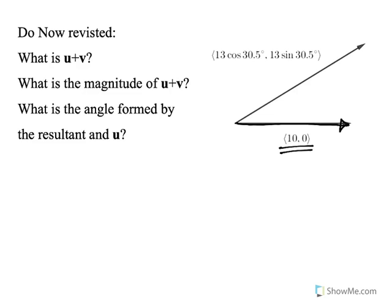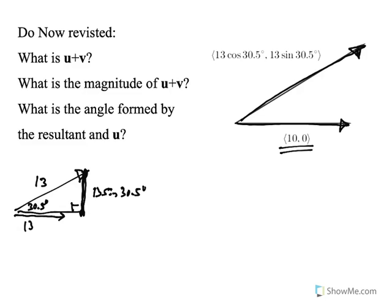The slanted one here, its components are 13 cosine 30.5, 13 sine 30.5. That's because if I were to make this right angle, the force itself would be like the hypotenuse of the right triangle. This is 13 sine 30.5 and 13 cosine 30.5. Those are the components. So I can write the vector this way.